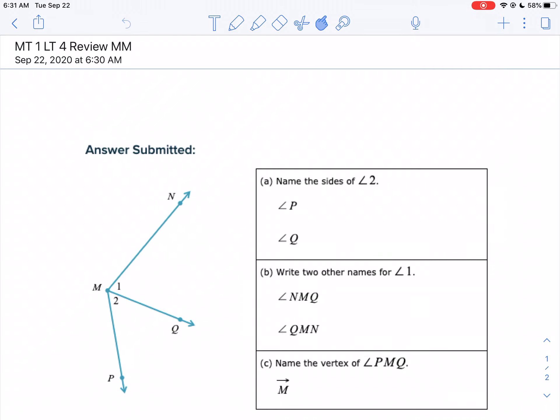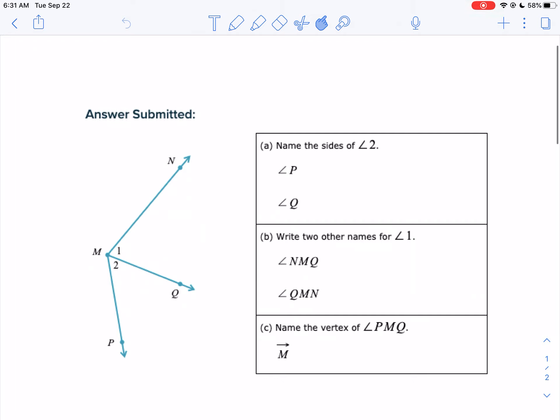We're going to take a look at your affirmation from MT1LT4. On letter A, when you name the sides of an angle, let's highlight the sides of angle 2.